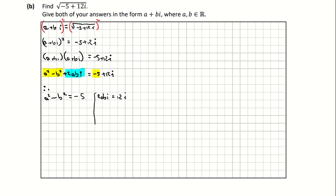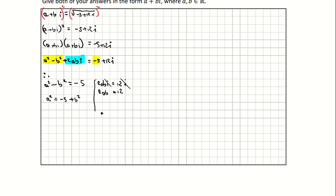From the real parts I'm going to write a squared equals negative 5 plus b squared. On the imaginary side, dividing across by i cancels the i, leaving 2ab equals 12. Dividing across by 2b gives a equals 12 divided by 2b, which simplifies to a equals 6 over b.